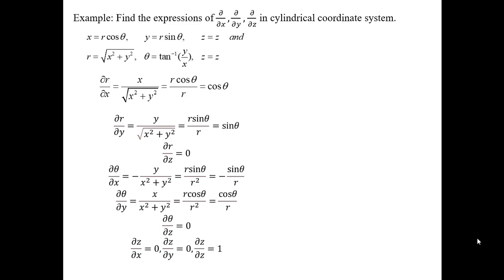We will now do some examples for the cylindrical polar coordinate system. The first example is to find the expressions of ∂/∂x, ∂/∂y, and ∂/∂z in cylindrical polar coordinates.